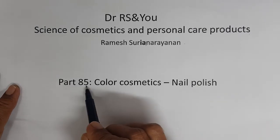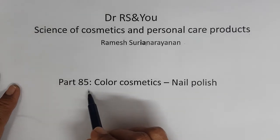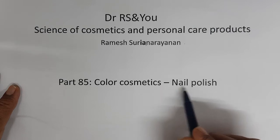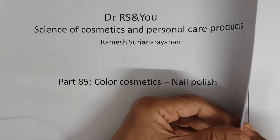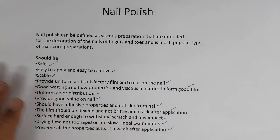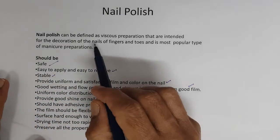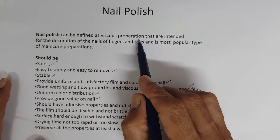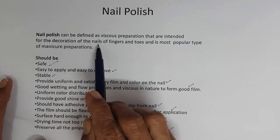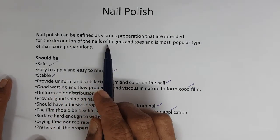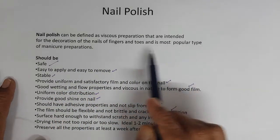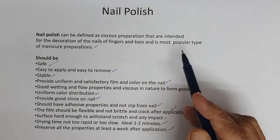Today we are in part 85 in the color cosmetics series. We will see about nail polish. Nail polish can be defined as a viscous preparation that is intended for the decoration of the nails of fingers and toes, and is the most popular type of manicure preparation.